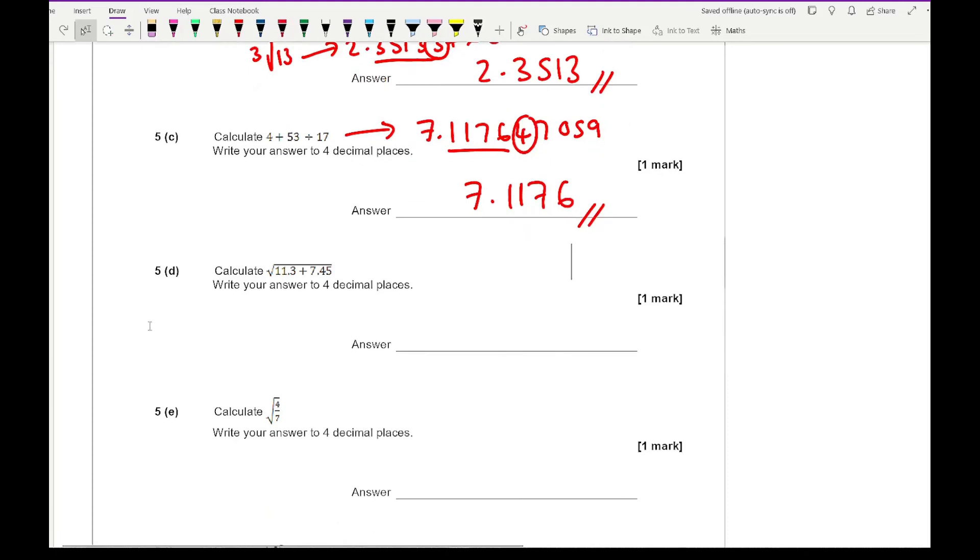For question 5D, we want to calculate the square root of 11.3 plus 7.45. If I enter that all on my calculator, I get 4.330127019. Rounding this to 4 decimal places gives 4.3301.